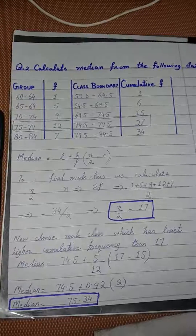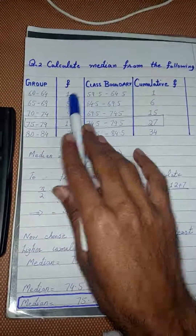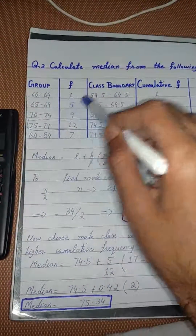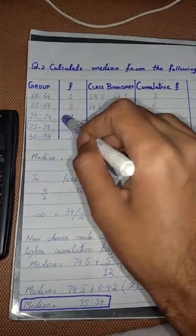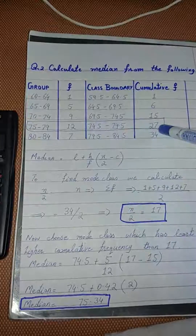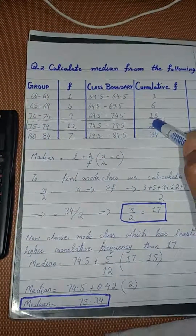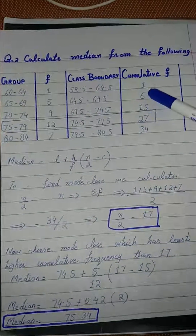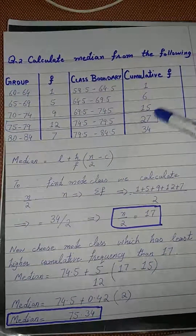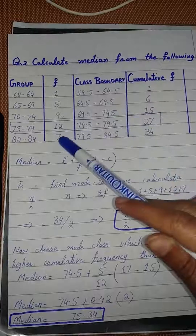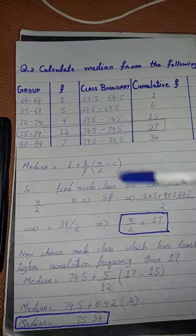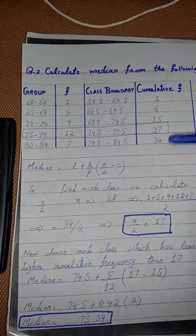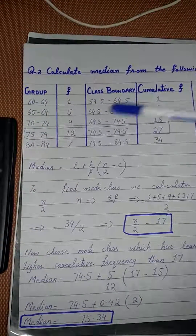Cumulative frequency کا مطلب ہے مجموعہ — یعنی frequencies کو اکٹھا کرتے جانا۔ ہر frequency میں اس سے اوپر والی frequency add کرتے جاتے ہیں۔ مثلاً: 5+8=13 نہیں بلکہ پہلی frequency 5، پھر 5+1=6، پھر 6+9=15، پھر 15+12=27، پھر 27+7=34۔ Cumulative frequency کی آخری value ہمیشہ total frequency یعنی n کے برابر ہوتی ہے۔